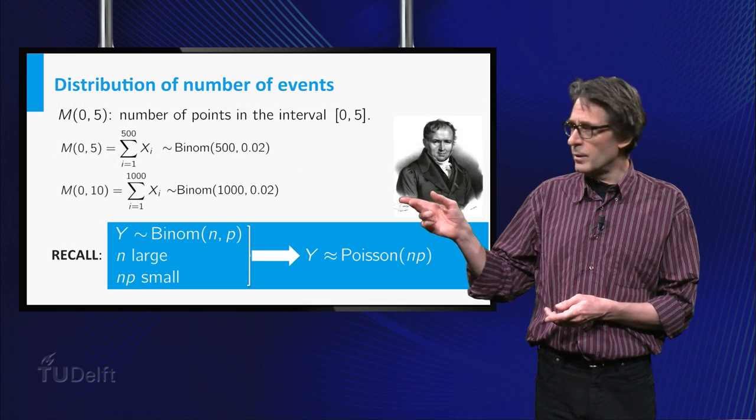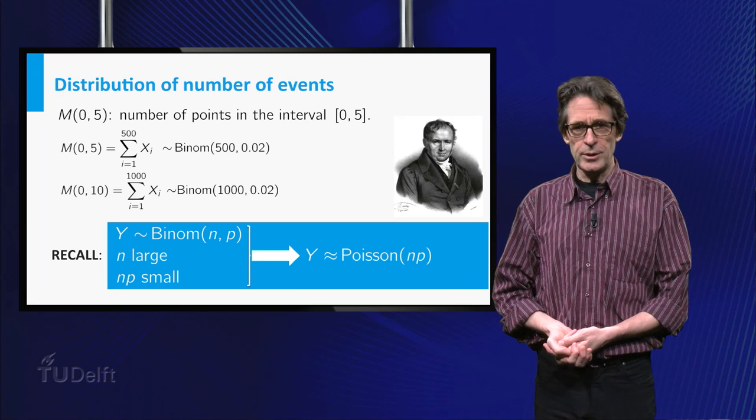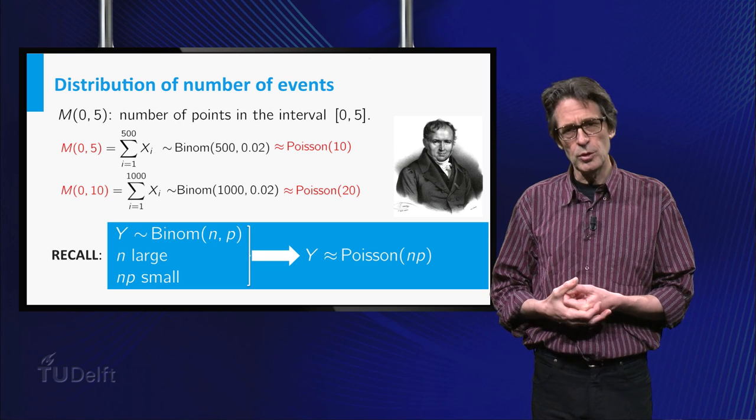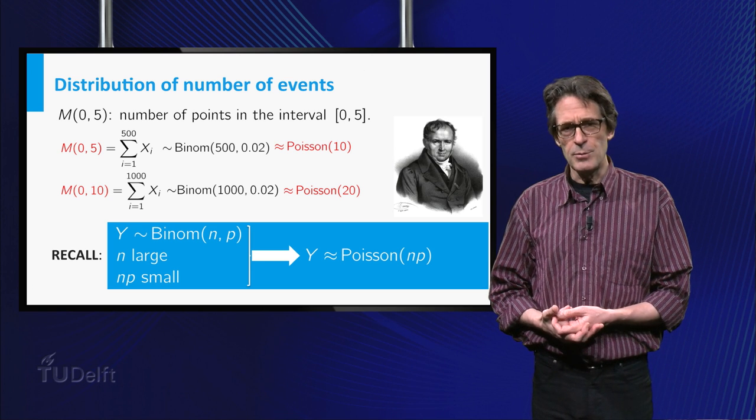You see, M. Poisson agrees. This leads to the following approximations of the distributions of M(0,5) and M(0,10).